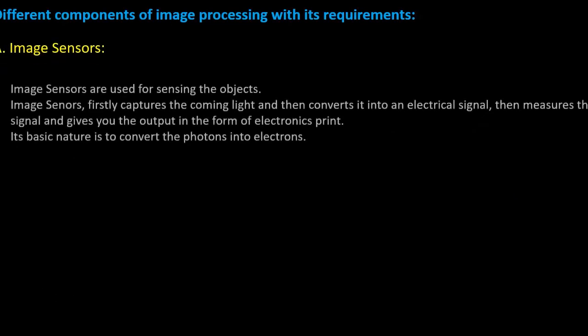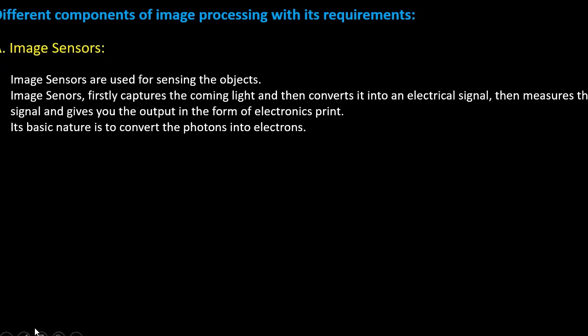Now, the different components of image processing and their requirements. The first component is the image sensor. Image sensors are used for sensing objects — the first step in image processing is to sense the object before capturing it. Image sensors first capture incoming light and then convert it into electrical signals, then measure the signals and give the output in the form of an electronic print. Its basic nature is to convert photons into electrons.